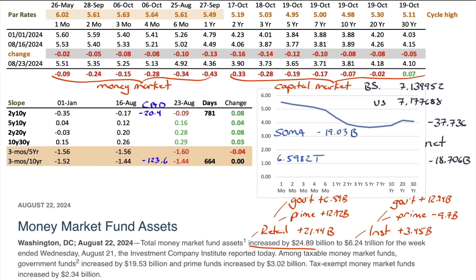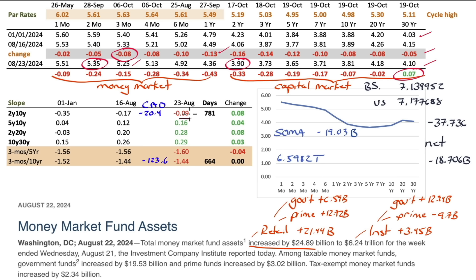Looking at money market rates, we can start to see the 3-month beginning to price in a 25 basis point cut in September — down 8 basis points to 5.25, which is below the effective federal funds rate. In fact, the 2-month is nearing the effective federal funds rate of 5.33. The 2-year is at 3.9% — rates and yields down across all tenors. The only tenor that is higher today than the beginning of the year is the 30-year, which started at 4.03 and is sitting at 4.1.